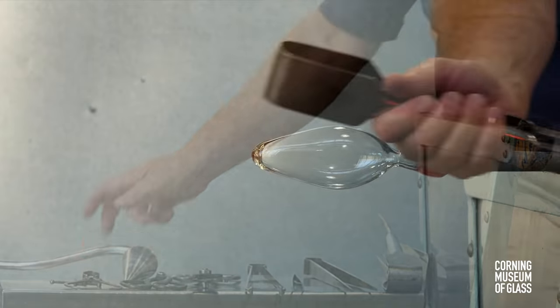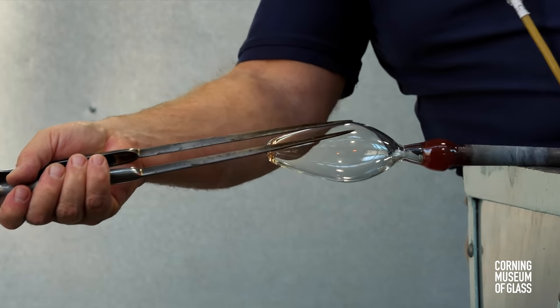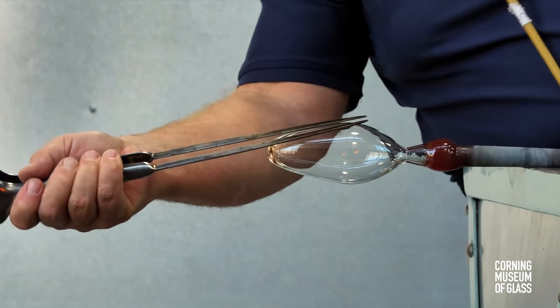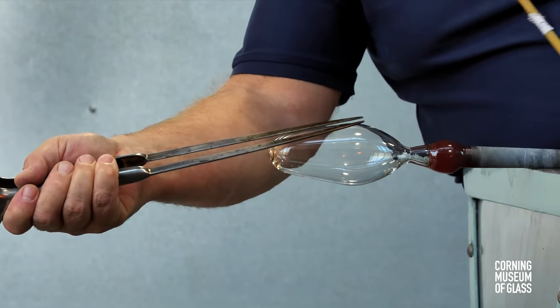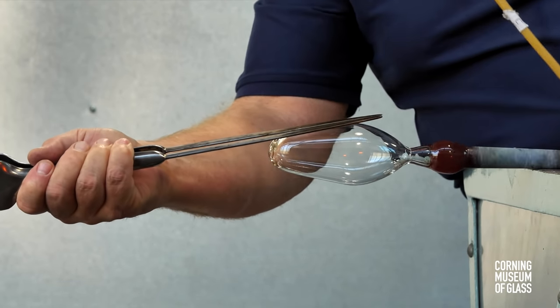The lower half is reheated, the jacks held against the side, and blowing continues. This both shapes the lowermost part of the bubble and blows it a little bit thinner.